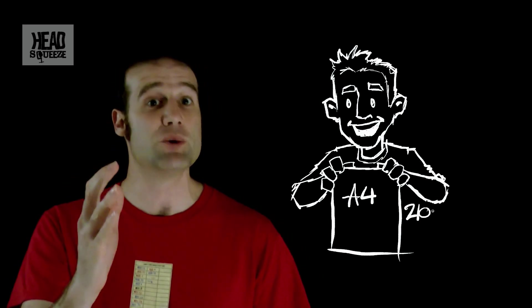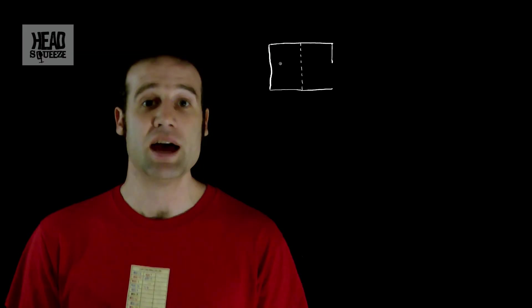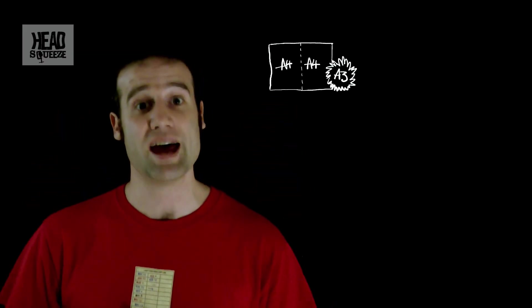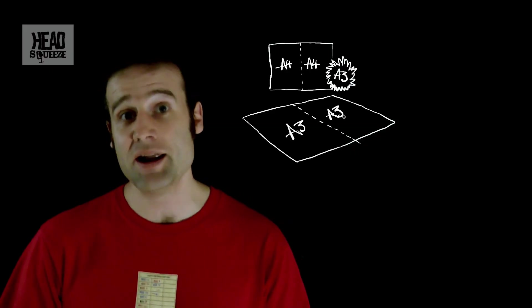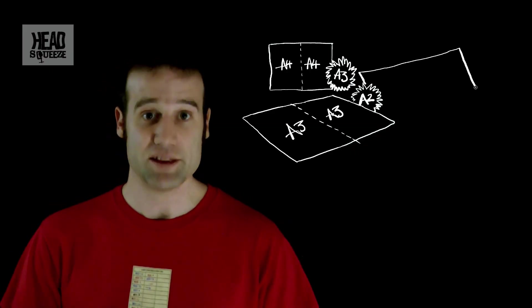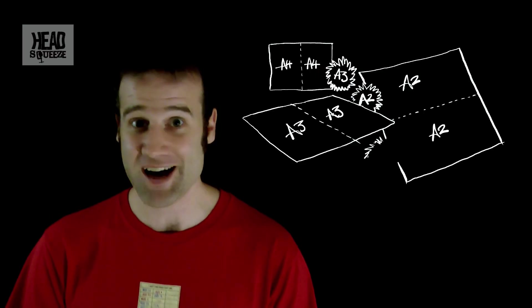What they did was start with A0 and work their way down. We can reverse the process quite easily. If you have two A4 sheets and you put them side by side, they make exactly the shape of one A3. Two A3s together give you an A2, two A2s give you an A1, and two A1 side by side are the same size as an A0. That's where it all started.